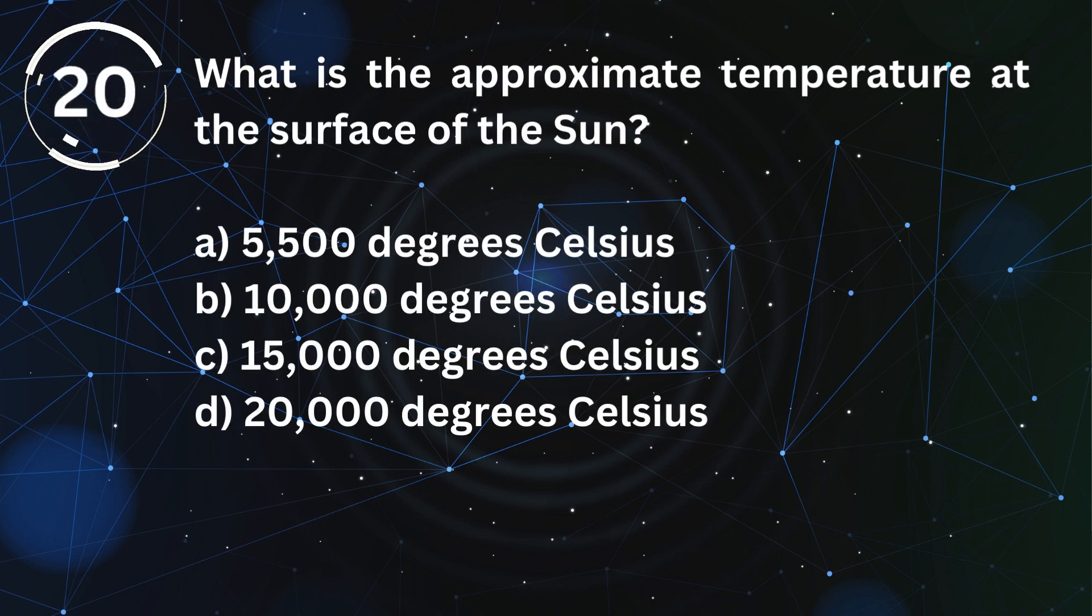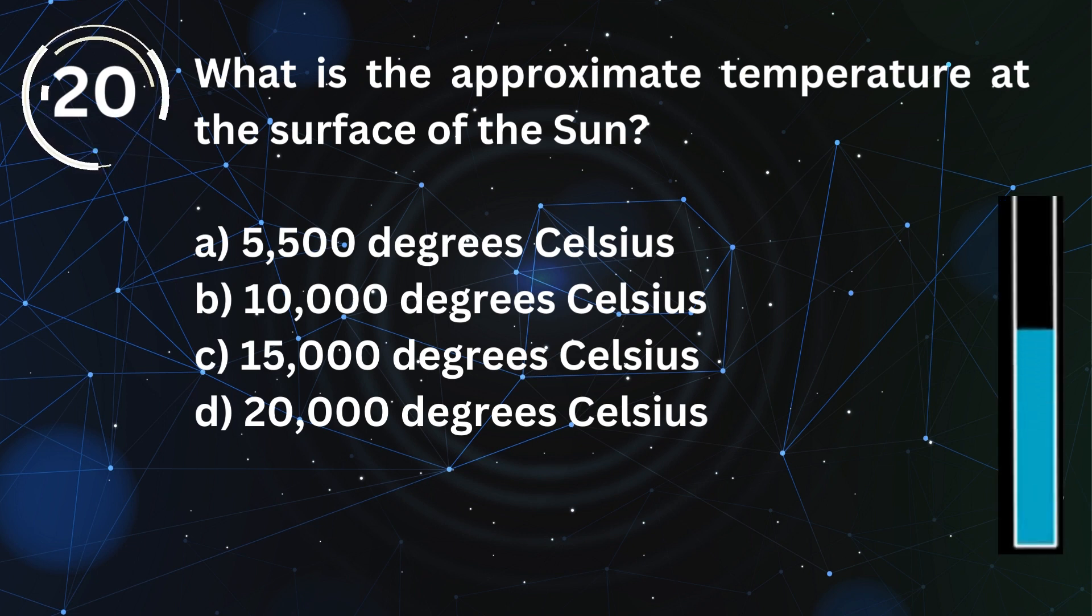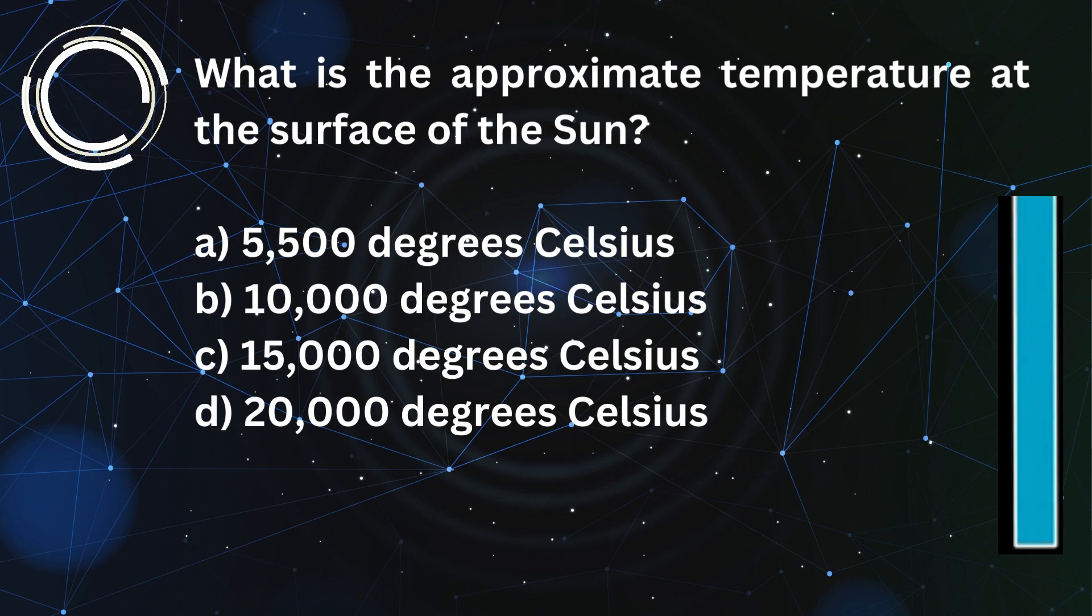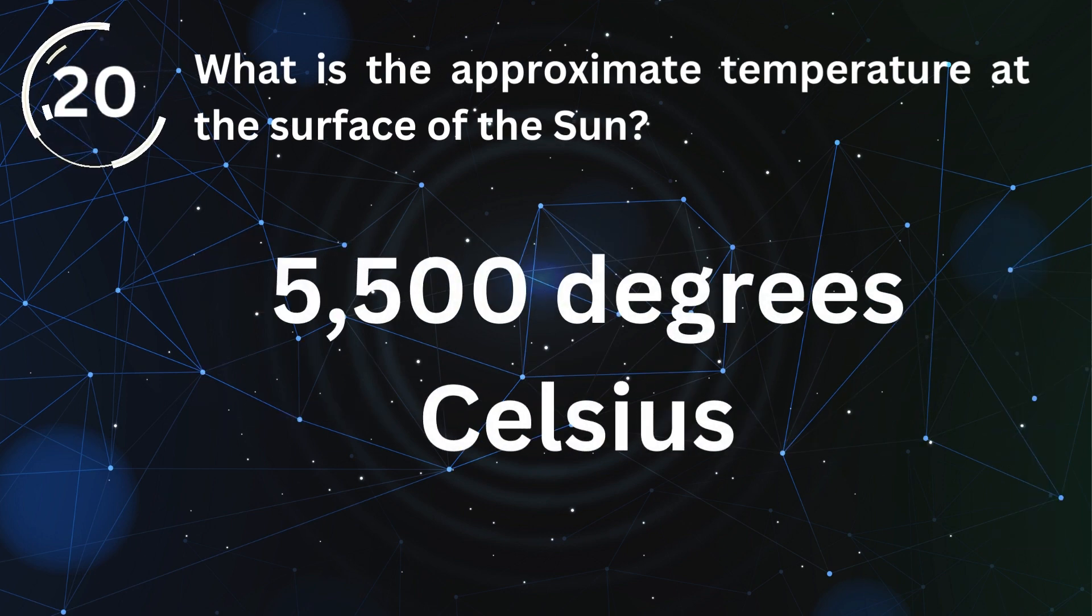What is the approximate temperature at the surface of the Sun? 5,500 degrees Celsius.